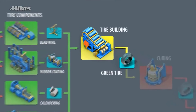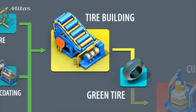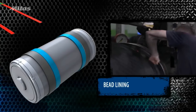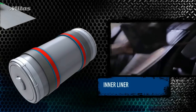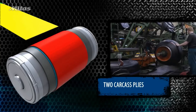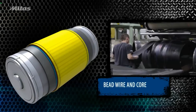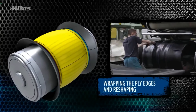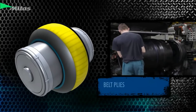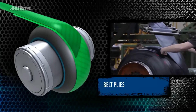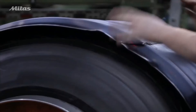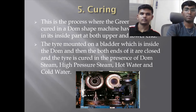At the tyre building stage, all tyre components are assembled on a tyre building drum. Tyre building begins with the sidewall and rim strip, the bead lining, inner liner, and two carcass plies. Bead cores are placed on the building drum, then the ply edges are wrapped around the bead core and the sidewalls are moved into position while the tyre is reshaped. After inflation, the belts and tread rubber are applied. For large tyres, the tread rubber is wound onto belt plies — this process produces a green tyre that already resembles the final product.